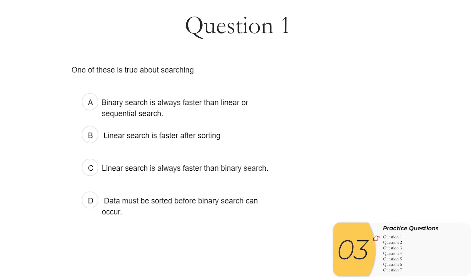Practice questions. Question one. One of these is true about searching. Well right away you know the data has to be sorted before binary searches can happen. So the answer right away is D. But you can look at the other ones. A, binary search is always faster than linear search. Not always, if what you're looking for is at the beginning linear search can be faster. B, linear search is faster after sorting. Actually no not really. It's gonna be about the same on average and now you spent all that time sorting which is kind of a waste of time because you only need to sort if you're doing binary searches. And C, linear search is always faster than binary search. No actually usually this is not true. Every so often it can be true but usually it's not true. So again the answer here is D.